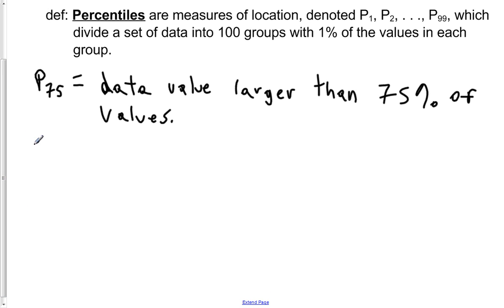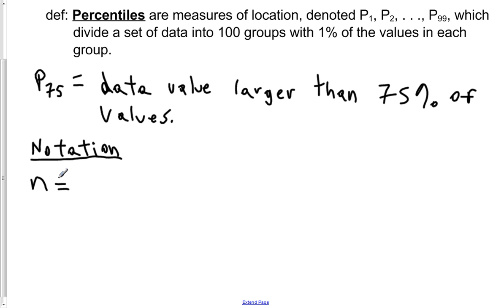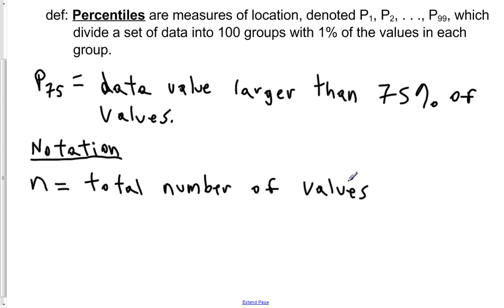There's some notation to look at before we get in depth into this percentile definition. N is basically the total number of data values, or the sample size. K denotes the percentile in question — K is the percentile that we're using.